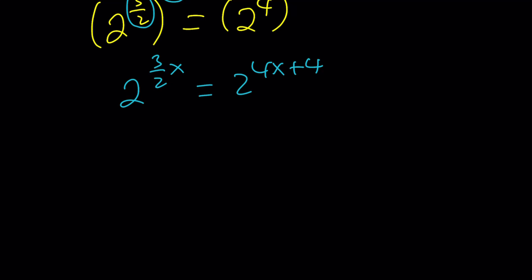Just set the exponents equal to each other. Check that the bases are not 1, 0, or negative 1. They're not. They're 2's. So the exponents must be equal. I'm going to start with this because that's a bigger x. 4x plus 4 equals 3 over 2x.